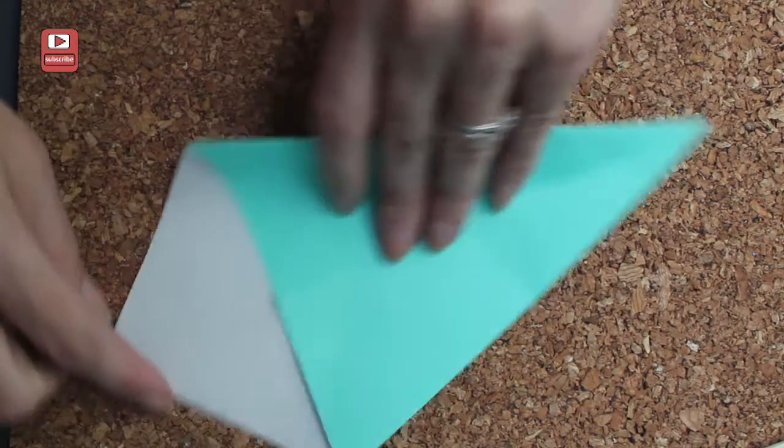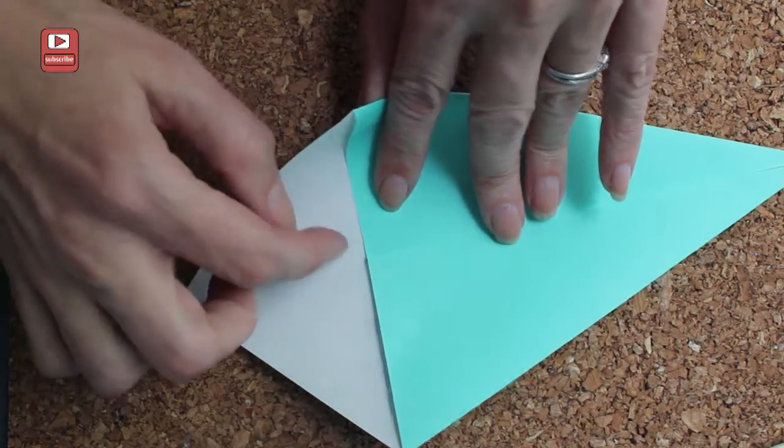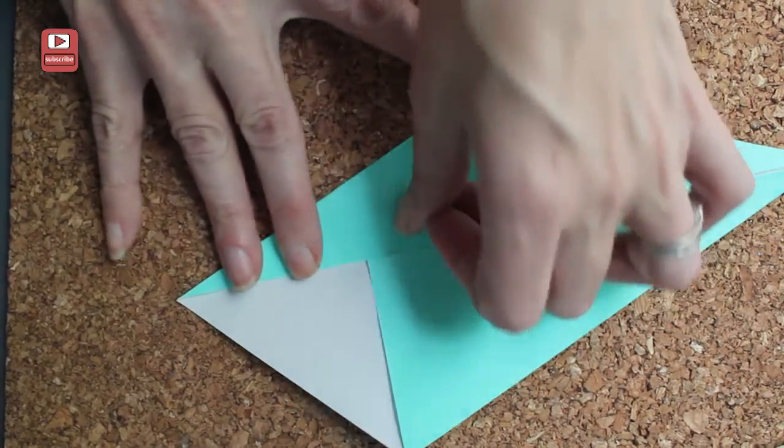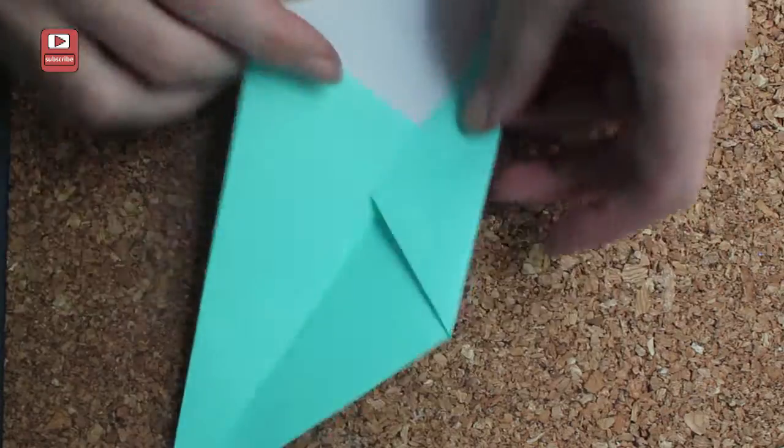Okay, now for the opposite side you're going to take this edge and take it to that center fold crease. Same for the other side.